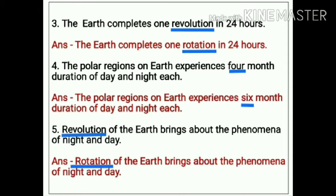Number 4. The polar regions on earth experience 4 month duration of day and night each. The error is '4.' The correct statement is: the polar regions on earth experience 6 month duration of day and night each.